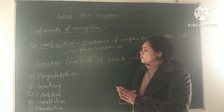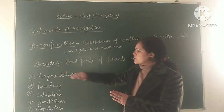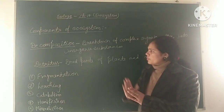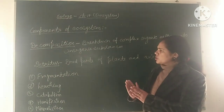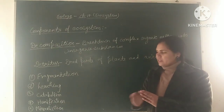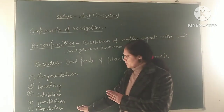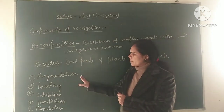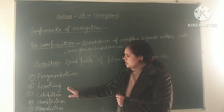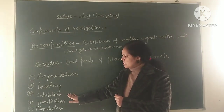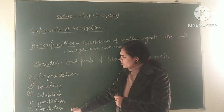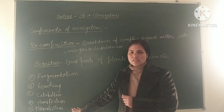The process of decomposition takes place on the detritus. The decomposition process occurs in many steps: first is fragmentation, second is leaching, third is catabolism, fourth is humification, and the fifth is mineralization.